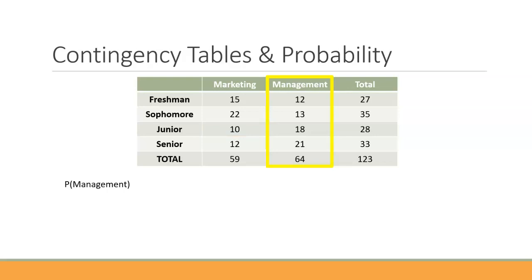For the final one — the probability of a management major — we're just looking at management with no other variables. We take the total number of management students and divide by 123, which comes out to 0.52, about a 52% chance.